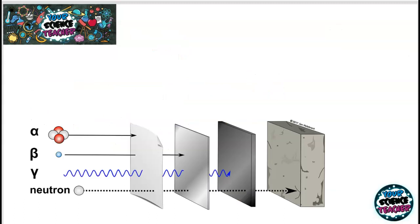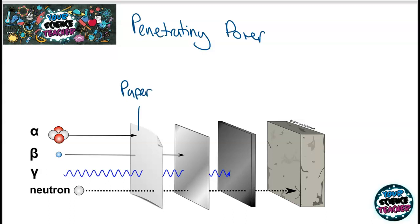The last required practical looks at the penetrating power of different radioactive sources. You can identify which source you have by seeing what objects stop it. Alpha radiation gets stopped by even paper and will only travel a few centimetres in air. Beta radiation goes straight through paper but can be stopped by a material such as aluminium. Gamma radiation is by far the most penetrating and will only be stopped by thick lead.